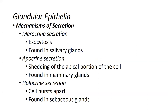Let's look at some of the mechanisms for secretion in exocrine glands, where the products are released via ducts. There are three mechanisms by which those products are released: merocrine secretion, apocrine secretion, and holocrine secretion. Merocrine secretion is simply exocytosis — a vesicle is formed within the cell containing some product or secretion, and that vesicle is released out onto the surface of the cell. An example of this is the salivary gland.